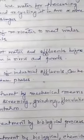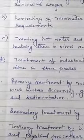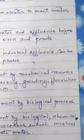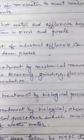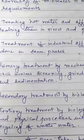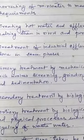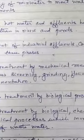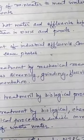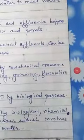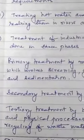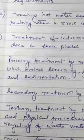Number D: treatment of industrial effluents can be done in three phases. First is primary treatment by mechanical means, which involves screening, grinding, flocculation, and sedimentation. Screening means separating solid substances of bigger size by setting up nets on the passage of water. Grinding means crushing stones into smaller particles using grinders. Flocculation means separating lighter solid substances that float on water. Sedimentation means allowing heavier particles to settle down.